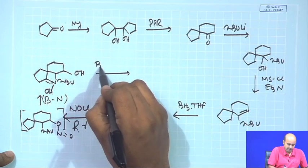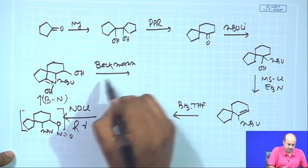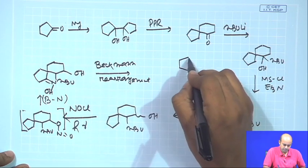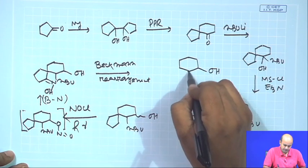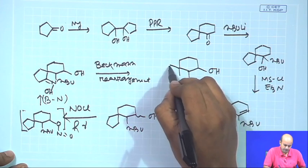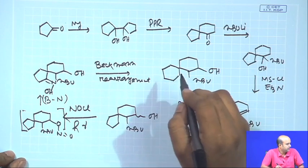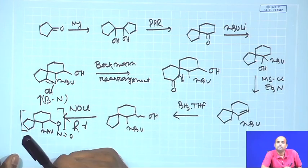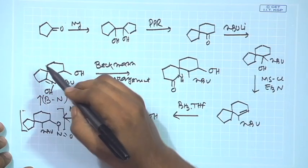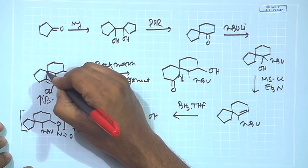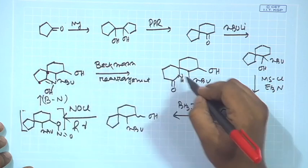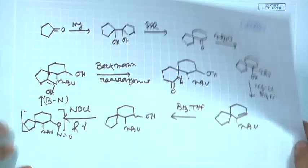Then you do a Beckman rearrangement transformation - that is also a very standard reaction. Your N-butyl will remain here, and you will basically get the ring-expanded product. Normally, Beckman rearrangement is basically migration towards the electron-deficient nitrogen. The more stabilized or more substituted carbon will migrate. Out of the possible carbons, this carbon is more substituted, so this will migrate - and that is why this carbon has a direct nitrogen bond.